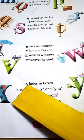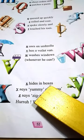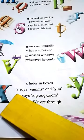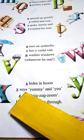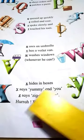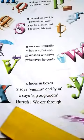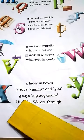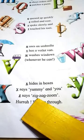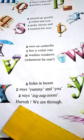X hides in boxes. Y says yummy and you. Z says zig zag zoom.